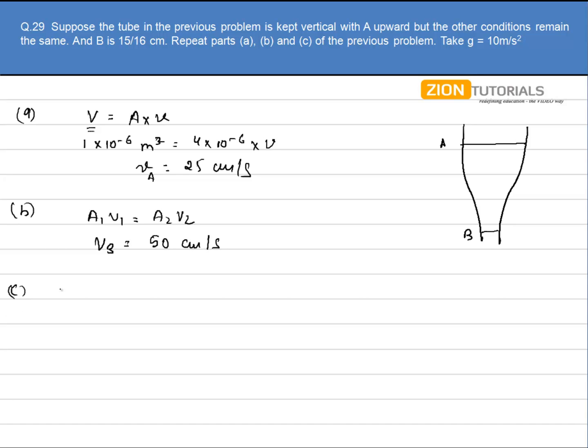In part C, if I apply the Bernoulli equation, that is pressure at A plus half rho va square plus rho g ha equals pressure at B plus half rho vb square plus rho g hb.